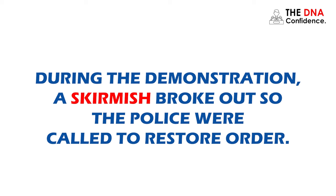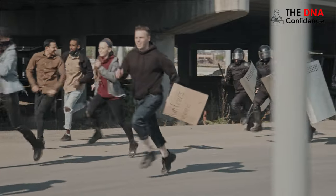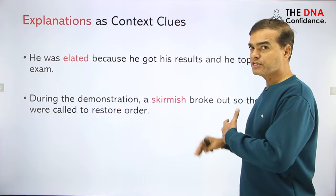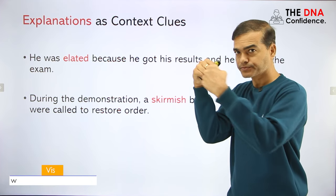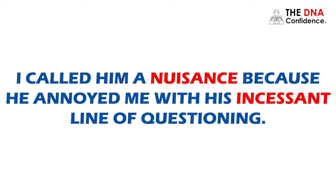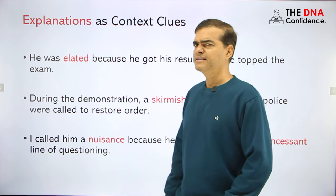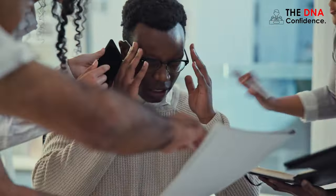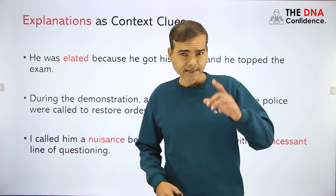Another example: 'During the demonstration, a skirmish broke out, so the police were called to restore law and order.' From the context — demonstration, police called — you can figure out skirmish means a fight, perhaps between two groups. Also: 'I called him a nuisance because he annoyed me with his incessant line of questioning.' Incessant means continuous, and nuisance means a headache, a problem or trouble.